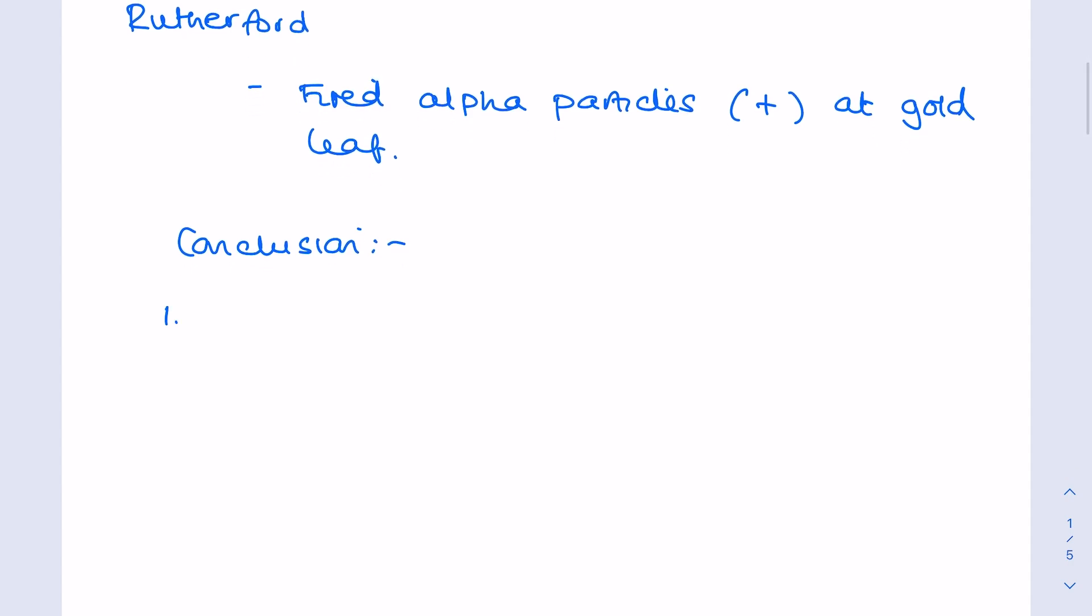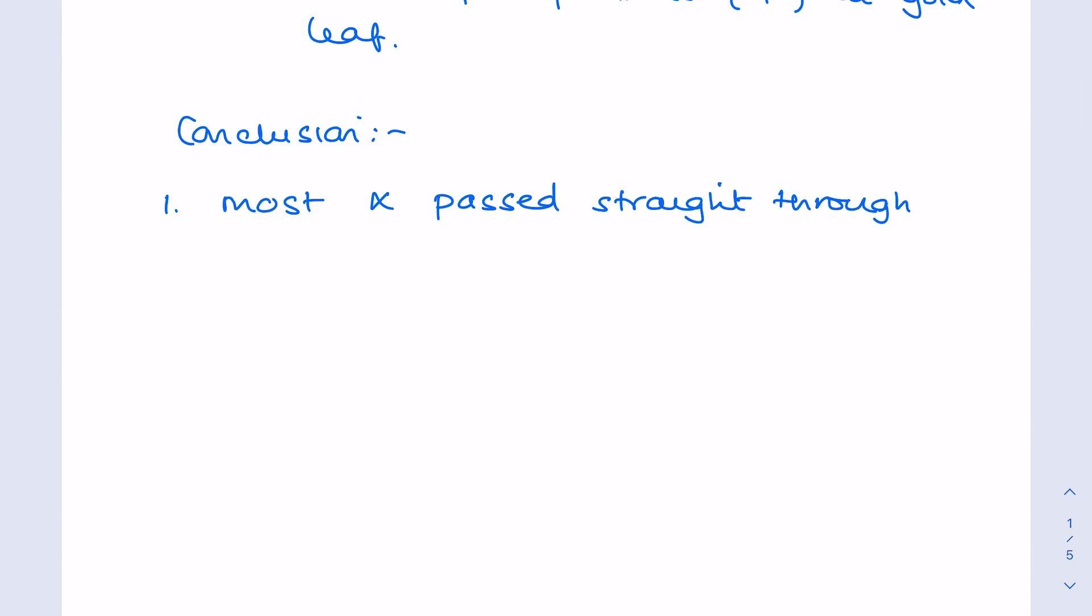First of all, most alpha particles pass straight through the foil. So what can we conclude about the structure of the atom? That it's actually largely empty space, which obviously differs greatly from Thompson's plum pudding model.